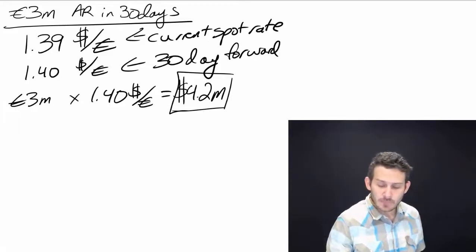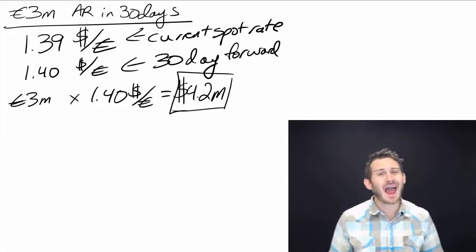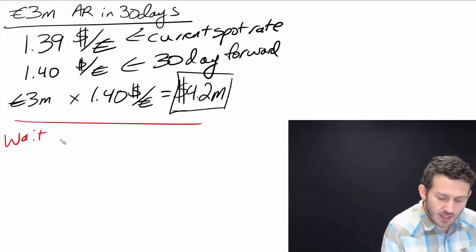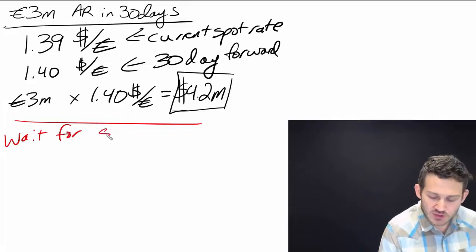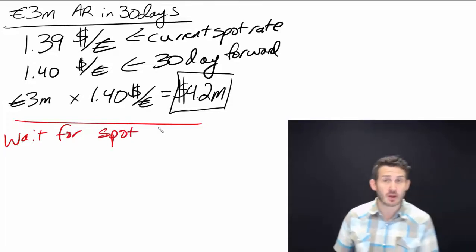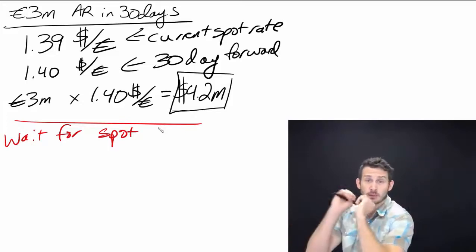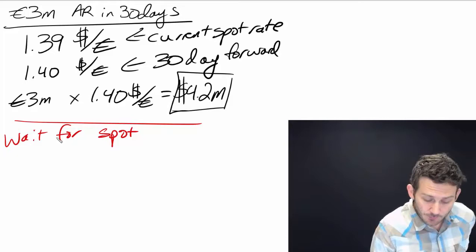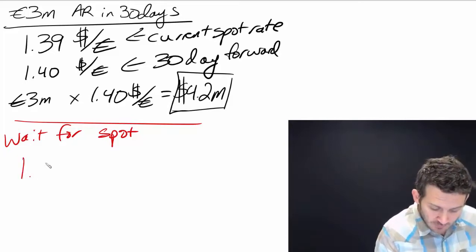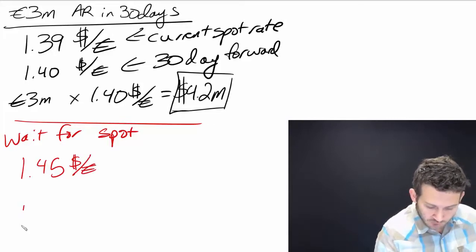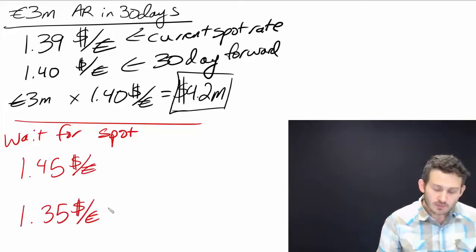Now, just to illustrate why we might want to do this, let's say: what's going to happen if I just wait for the spot? If I wait to exchange and I just exchange at the market rate in 30 days - I'm just going to go out into the market. Let's say that our spot rate ends up jumping up to 1.45 dollars per euro, or it goes down to say 1.35.